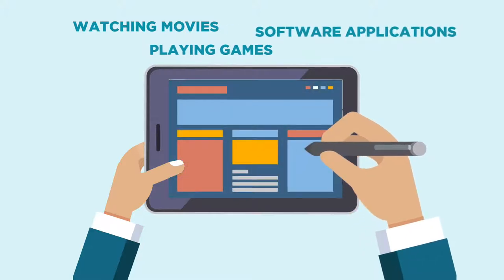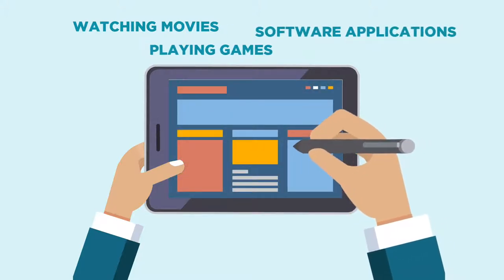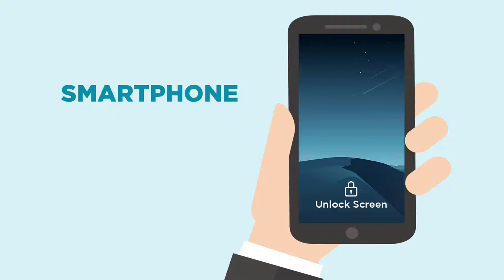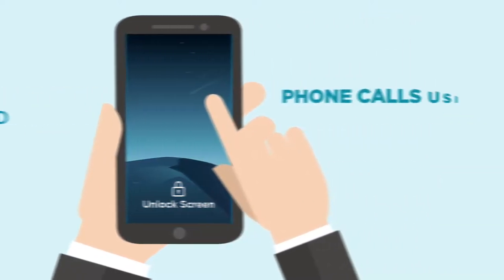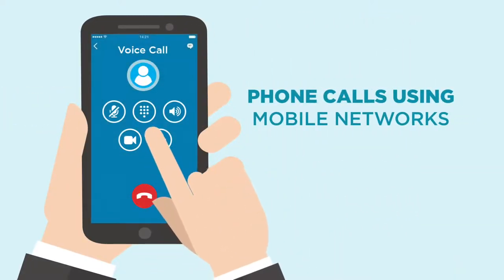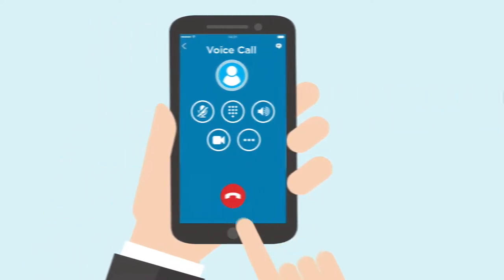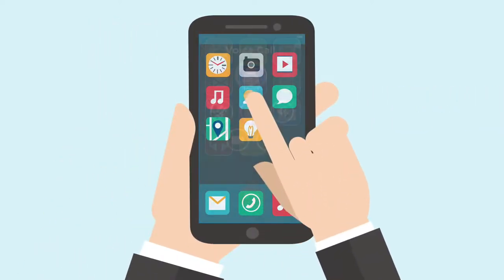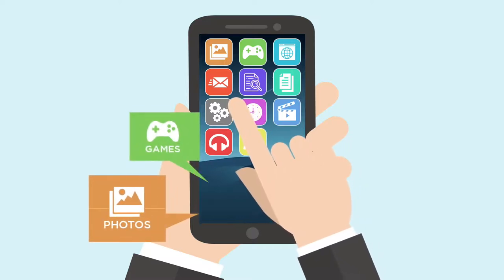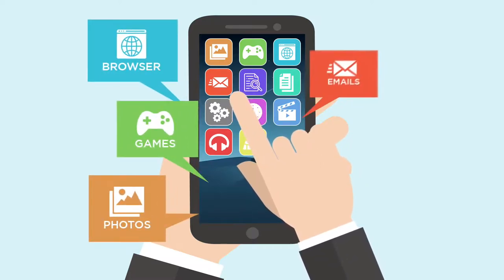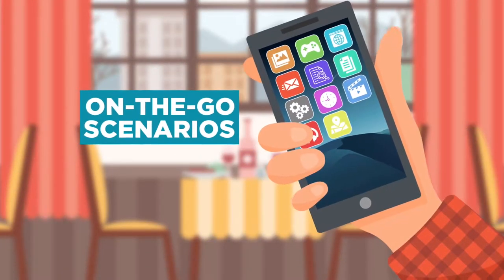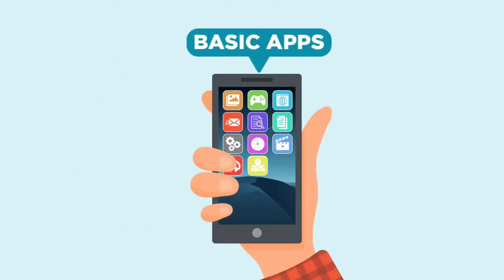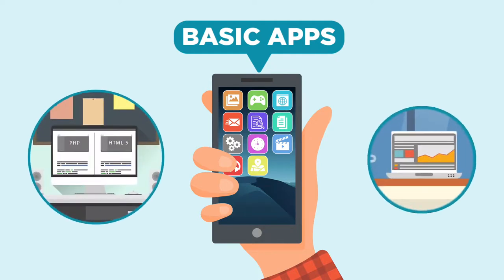You can install software applications on tablets that allow you to perform various tasks. A smartphone is a common type of portable personal computing device that is small enough to be handheld. The primary use of smartphones is to make phone calls using mobile networks, but they can be used for much more. You can use a variety of software applications on your smartphone that allow you to take photos, play games, browse the web, send emails, read documents, and more. These apps are great for on-the-go scenarios, but they are typically a lot more basic than the apps you can install on your desktop or laptop computer.